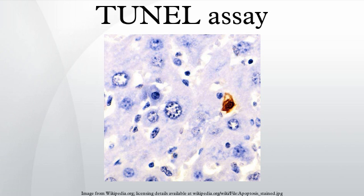It may also label cells that have suffered severe DNA damage. Originally described in the paper by Gavrieli, Sherman, and Ben-Sasson in 1992, TUNEL has become one of the main methods for detecting apoptotic programmed cell death.